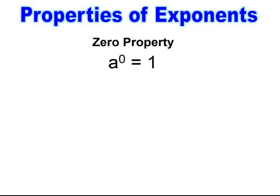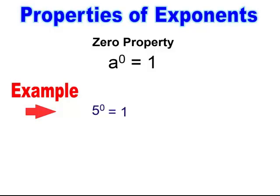The next property is anything raised to the 0 power equals 1. If I have 5 to the 0 power, it equals 1, not 5. If I have a quantity raised to a 0 power, it equals 1.